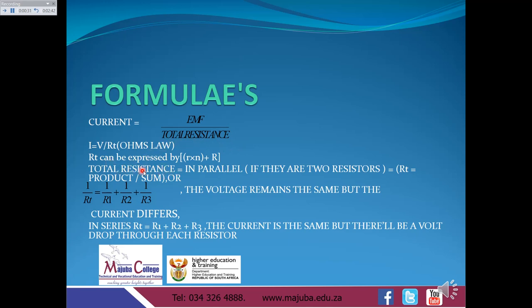How do we calculate the total resistance if we've got the resistors in parallel? If there are two resistors, your RT will be equal to product over sum. If you've got more than two resistors, you will have 1 over RT equals to 1 over R1 plus 1 over R2 plus 1 over R3, depending on the number of resistors that you have. Here the voltage will remain the same, but the current will differ. For the resistors in series, your RT will be equal to R1 plus R2 plus R3, depending on the number of resistors. Here the current will be the same, but there will be a volt drop through each resistor.